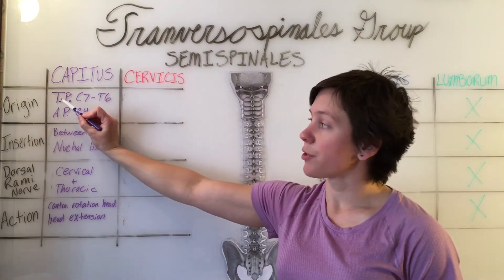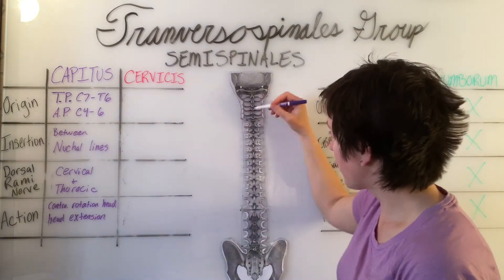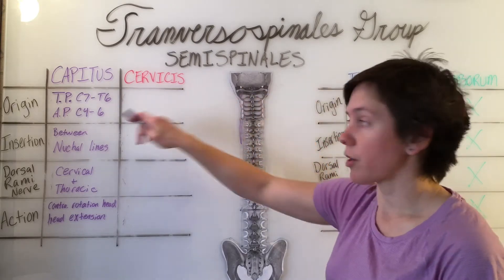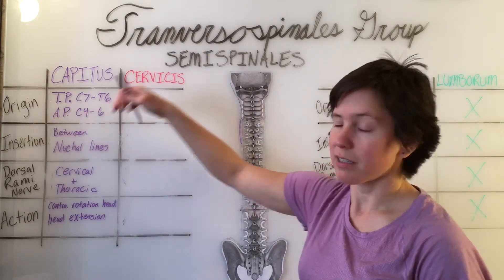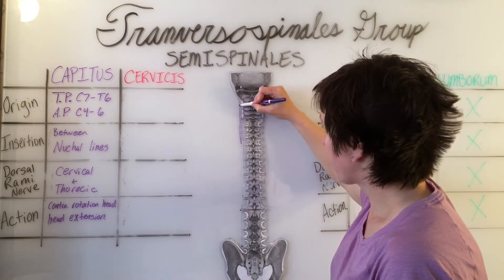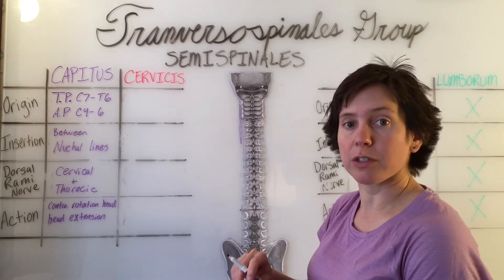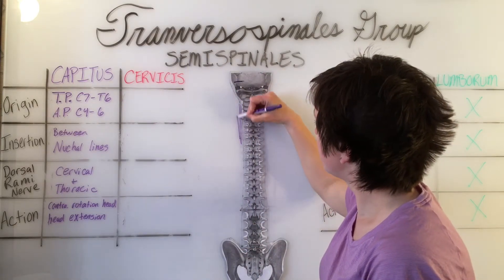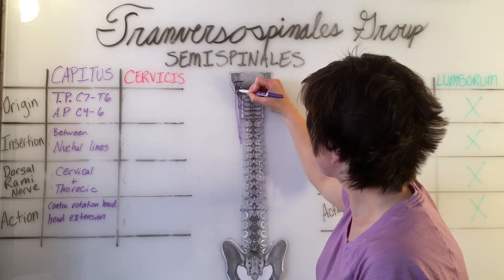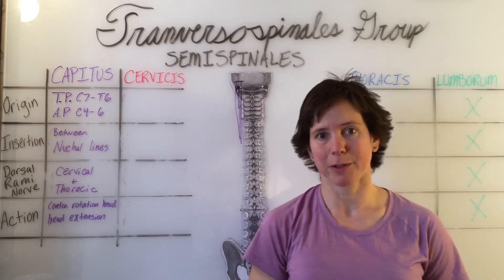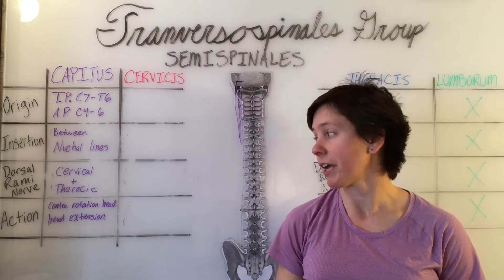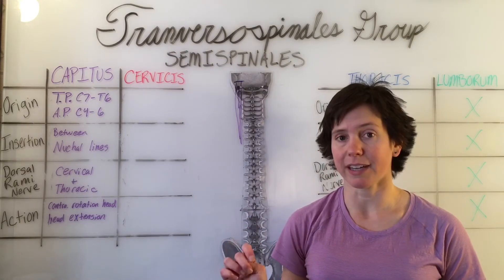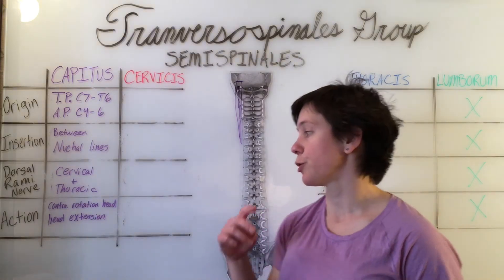It originates at the transverse process of C7 through T6, and also the articulating process of C4 through T6, and comes up to insert in between the nuchal lines in the skull. It is innervated by the dorsal rami of the cervical and thoracic nerves, and its action is minimal contralateral rotation of the head in addition to head extension.